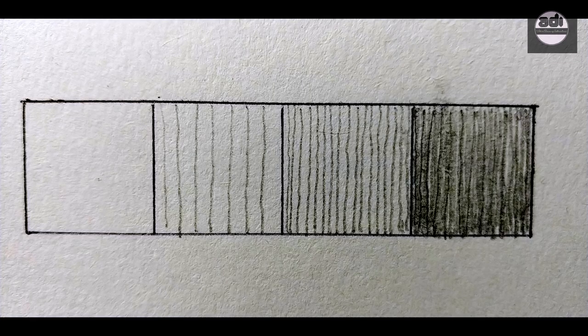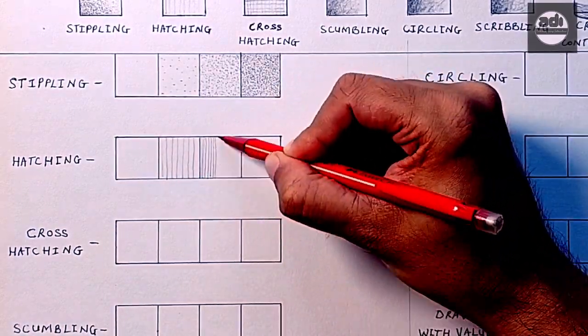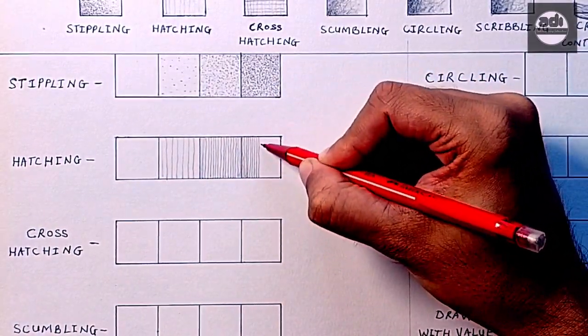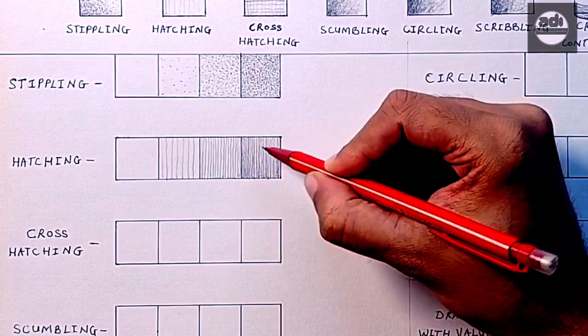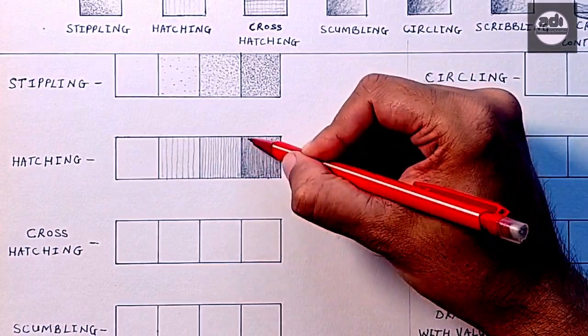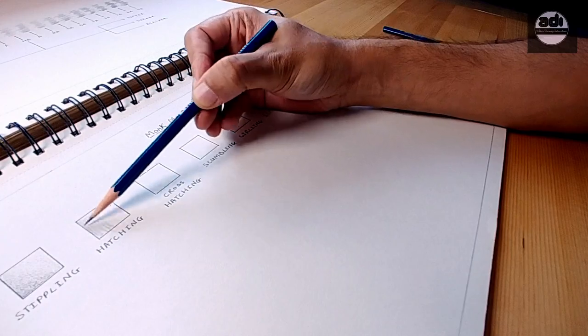Hatching is the mark making technique where you represent value using parallel lines. You can represent a range of values by varying the length, angle, closeness, thickness, etc. of the lines you draw.